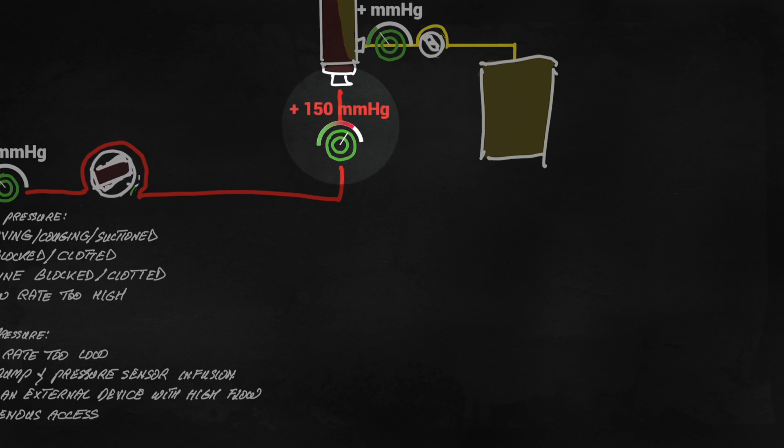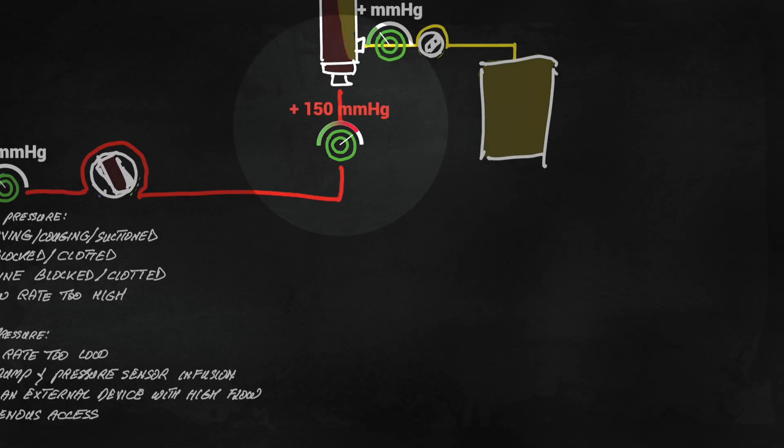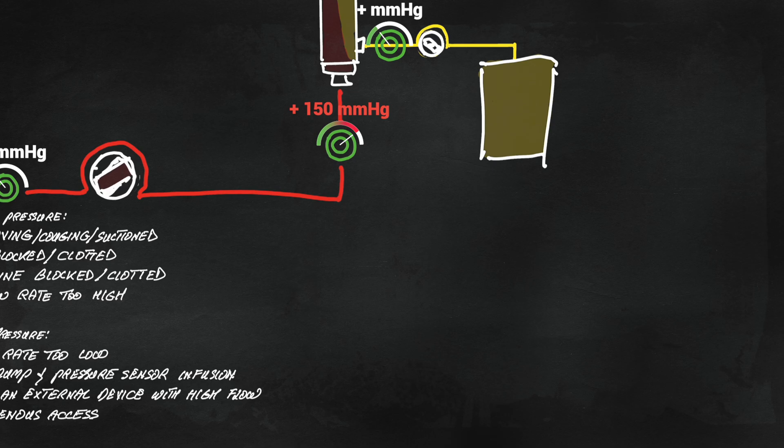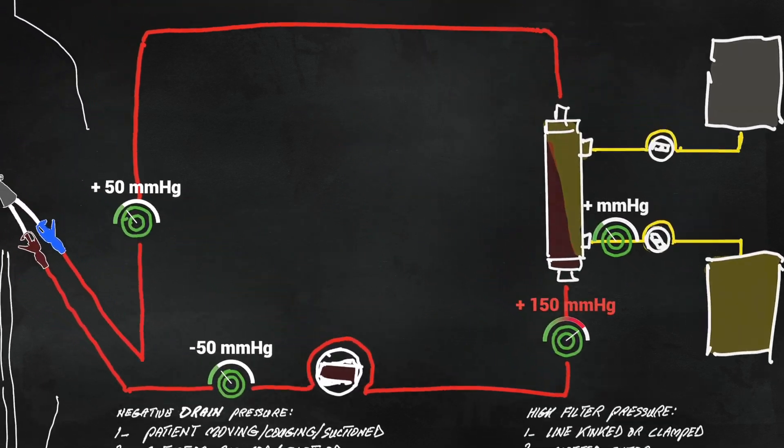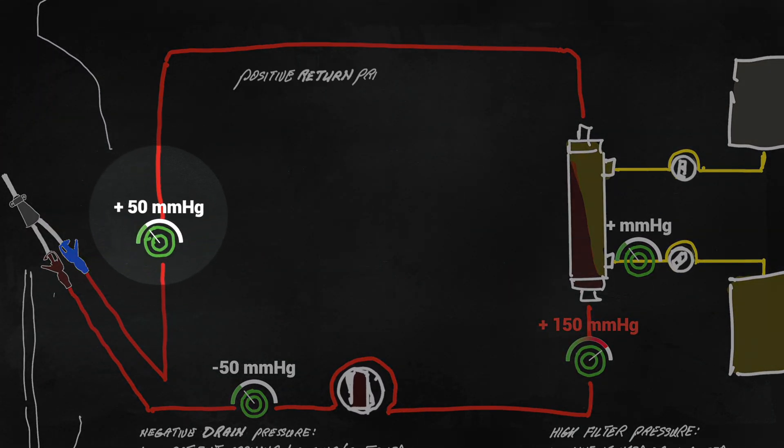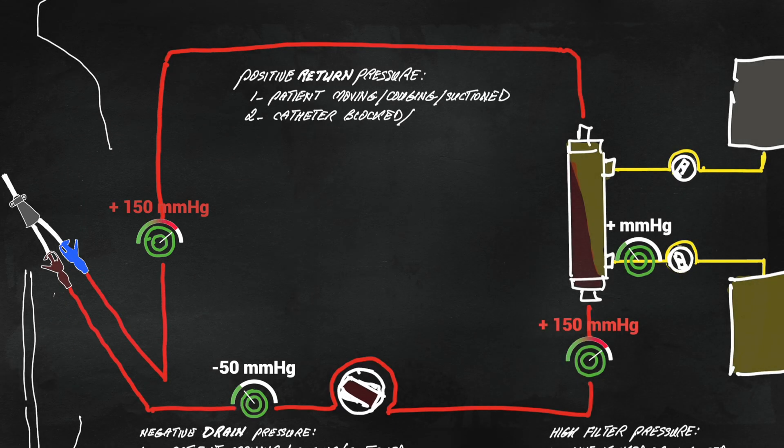The filter pressure will rise due to filter clotting or any blockade or kink in the line downstream. Similarly, the return pressure can go up when the catheter port is clotted or the return line is blocked or kinked.